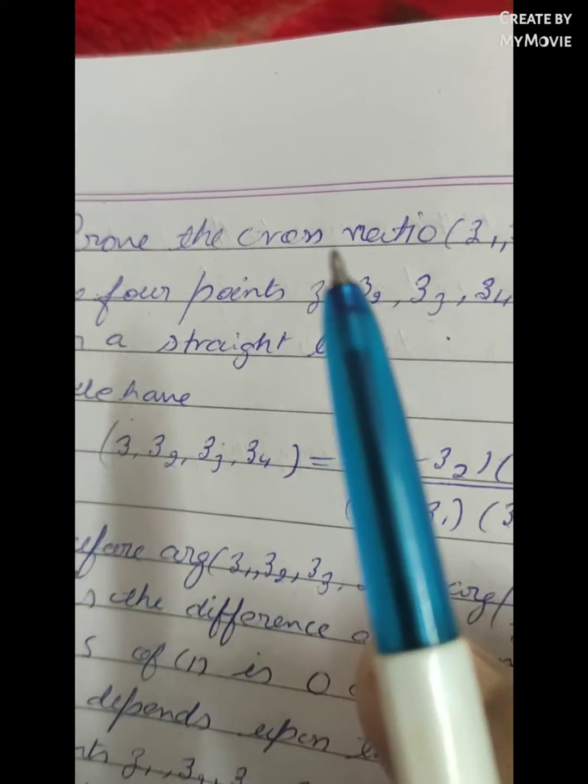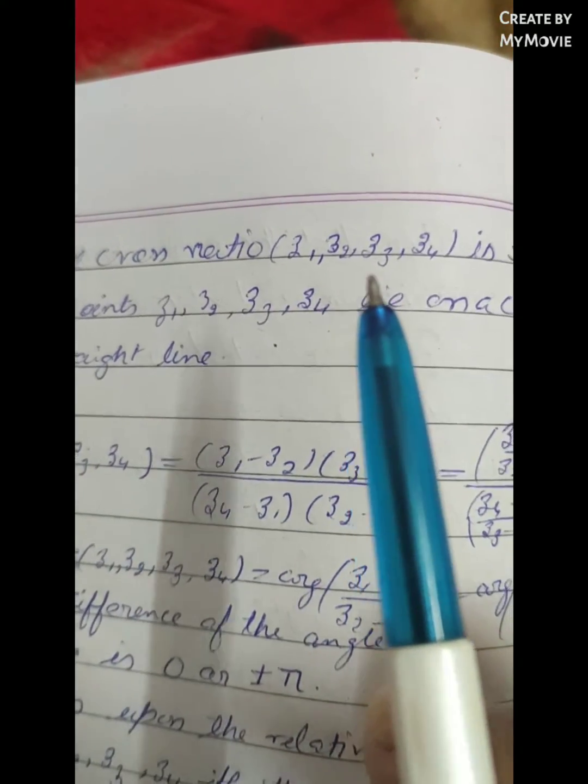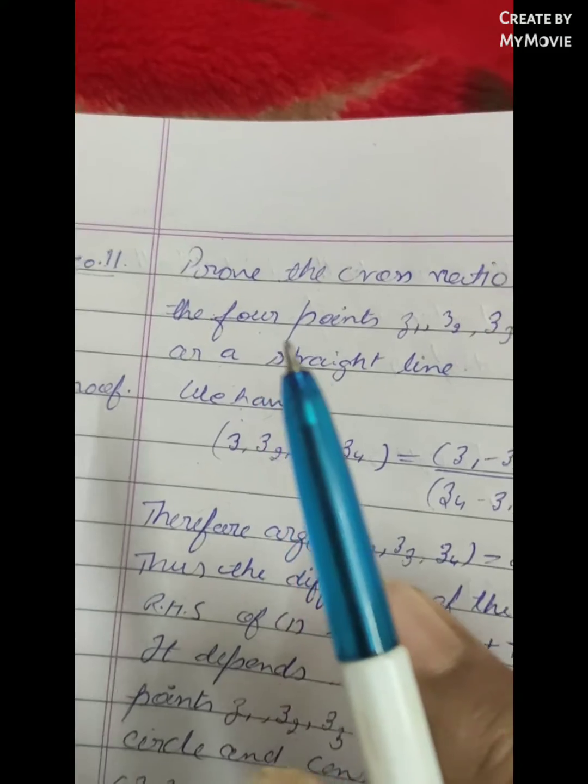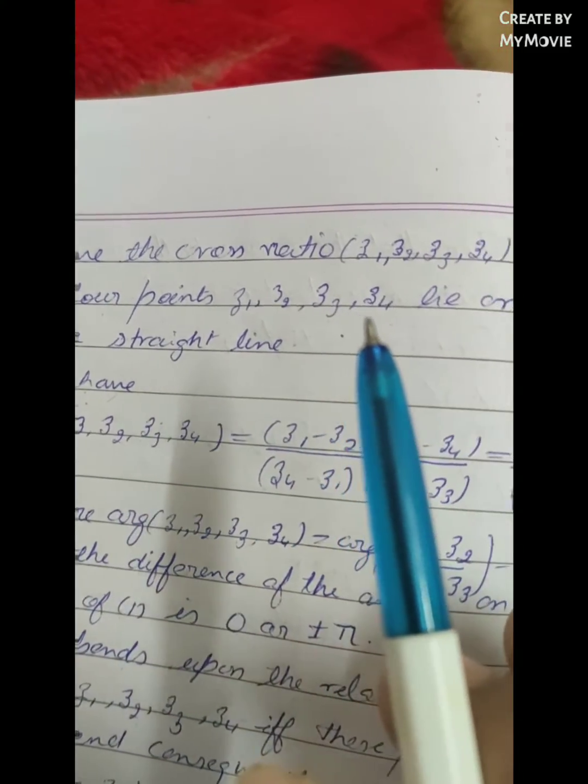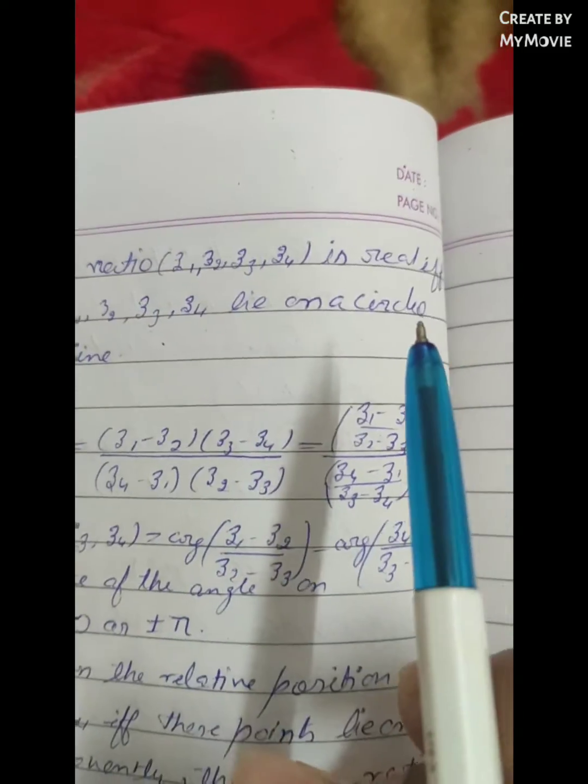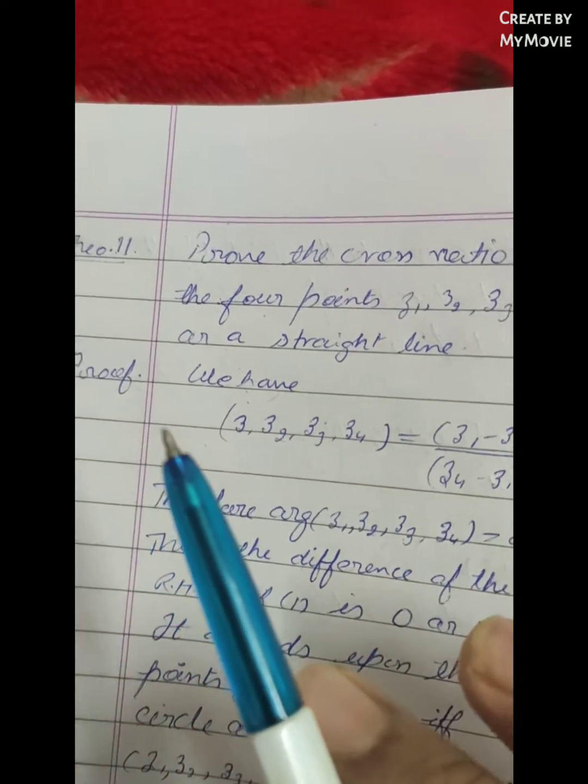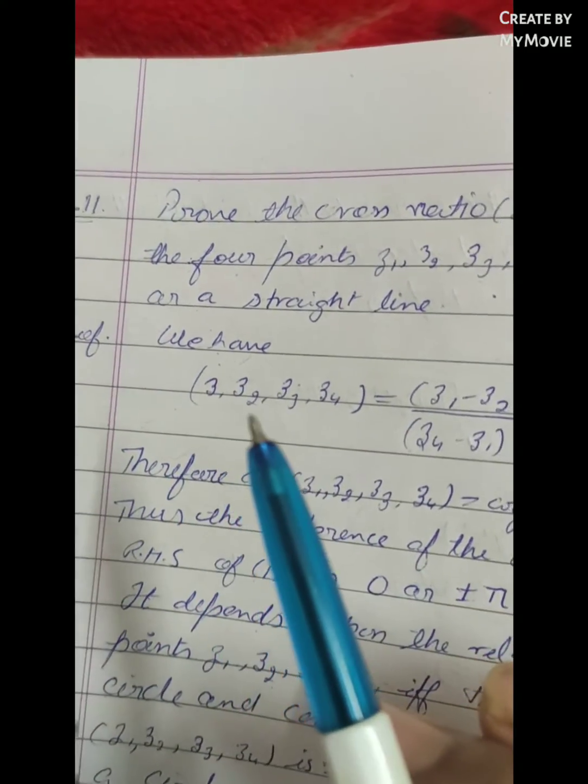Prove the cross ratio of Z1, Z2, Z3, Z4 are real if the four points Z1, Z2, Z3 and Z4 lie on a circle or a straight line. Proof: We have Z1,